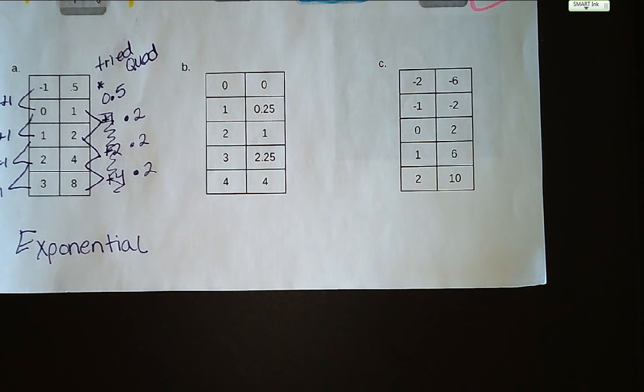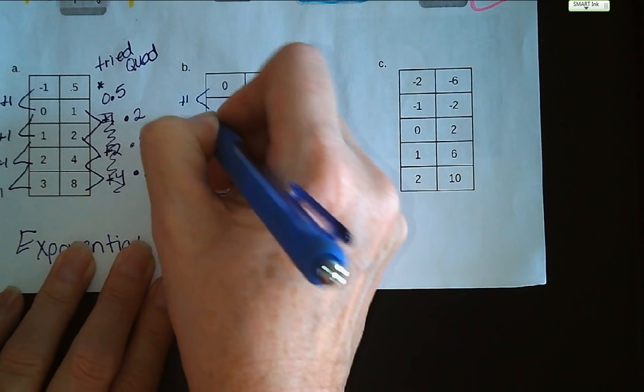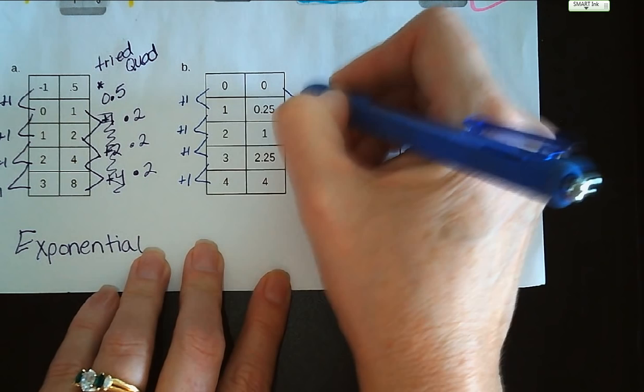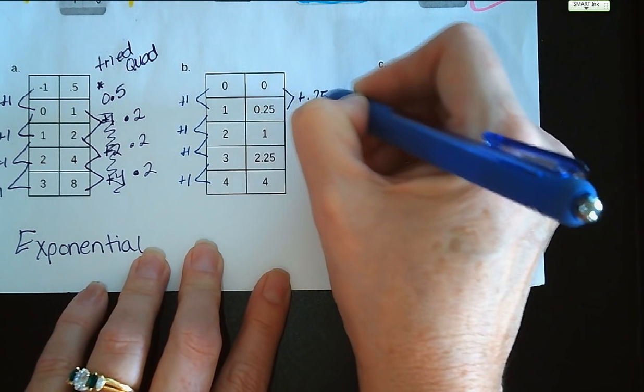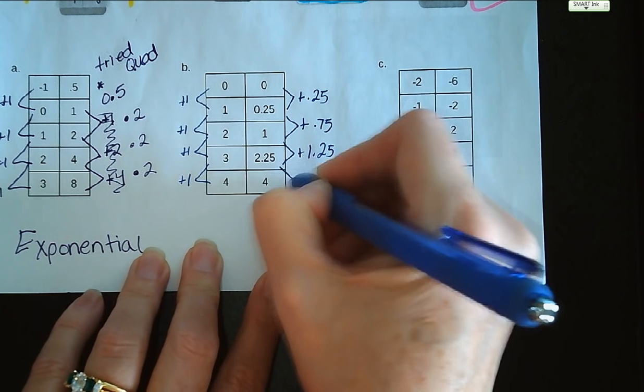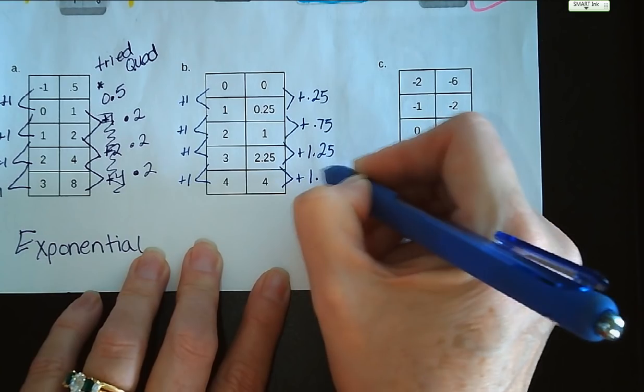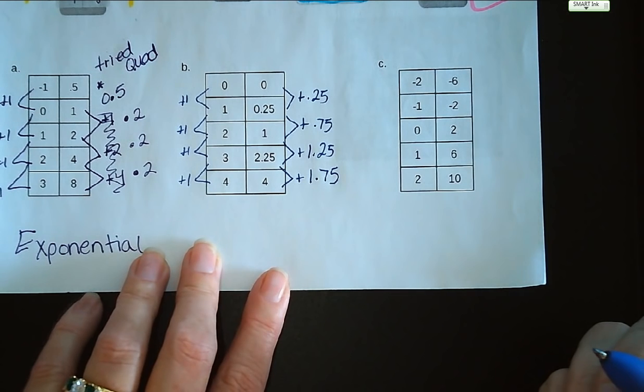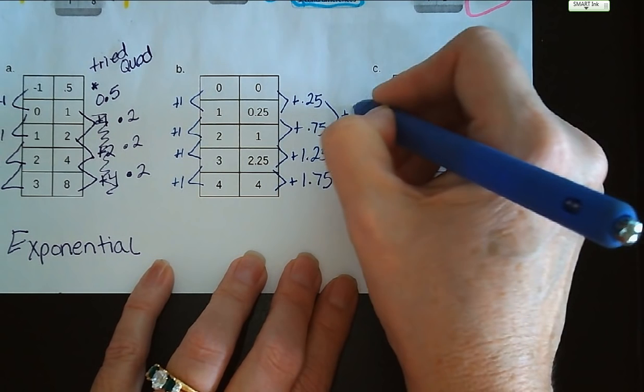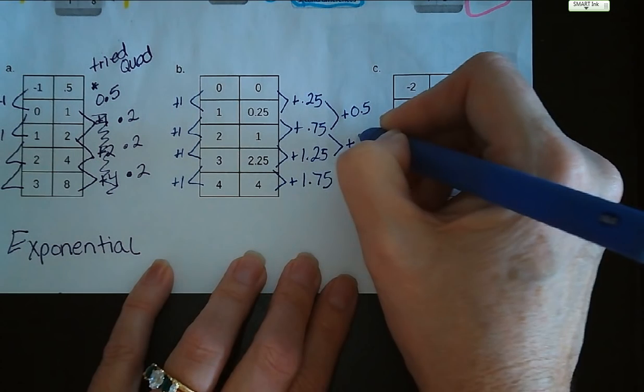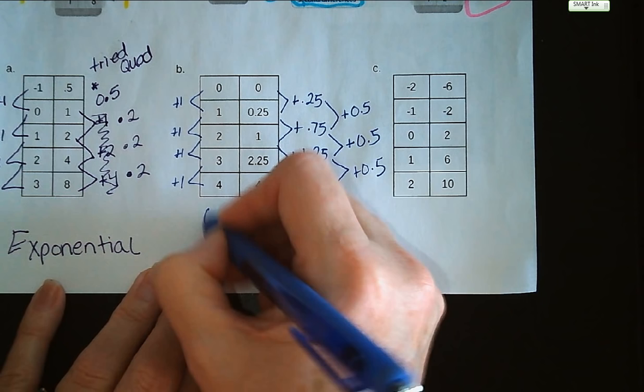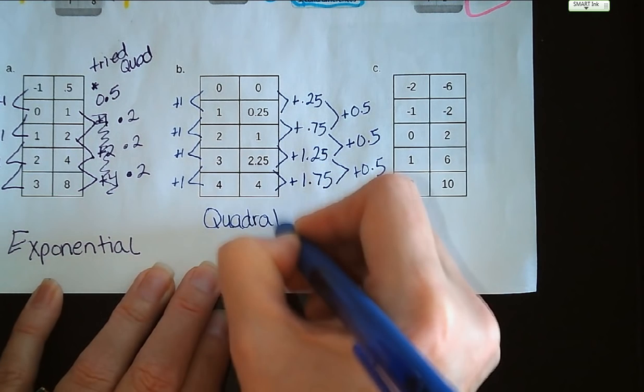All right. Letter B, our X values are increasing by 1 every time. For Y values, first differences are 0.25, then 0.75, then 0.75, then 1.75. It's not linear, so let's look at the second differences. From 0.25 to 0.75, we're adding 0.5. From 0.75 to 1.25, we're adding 0.5. And from 1.25 to 1.75, we're adding 0.5. So the second differences are constant, making this quadratic.